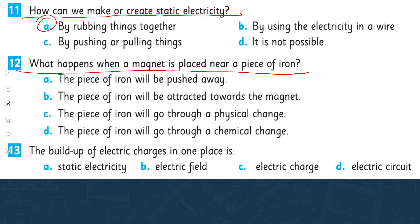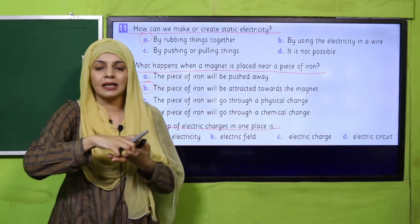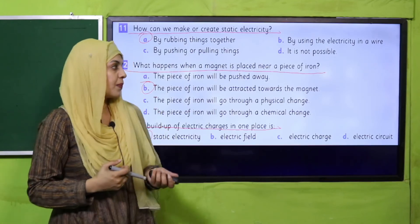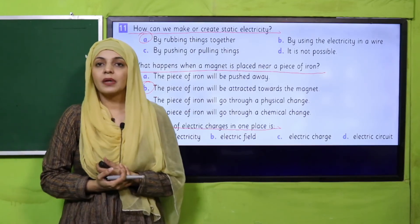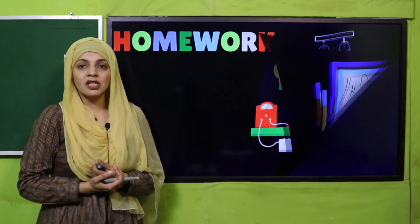the piece of iron will go through a physical change, the piece of iron will go through a chemical change. So they will be attracted towards the magnet. The buildup of electric charges in one place is: static electricity, electric field, electric charge, electric circuit. So that is static electricity. When charges build up in one place, they are static. So that is static electricity. So quickly finish it. I hope everybody has finished it. Now let's quickly move forward towards the homework.